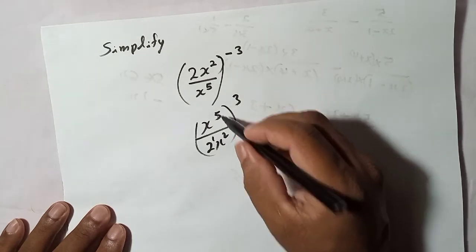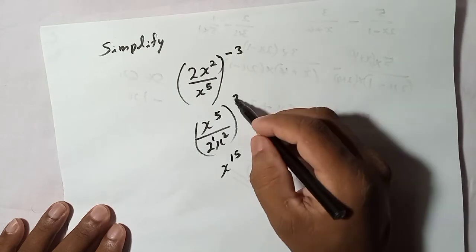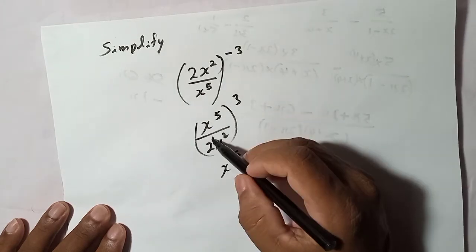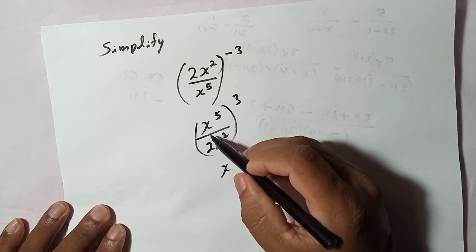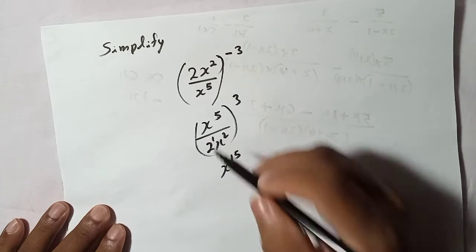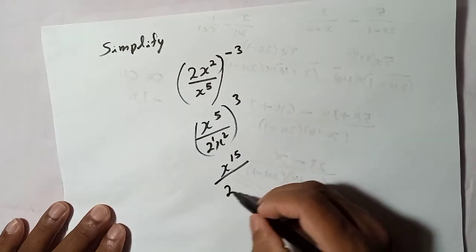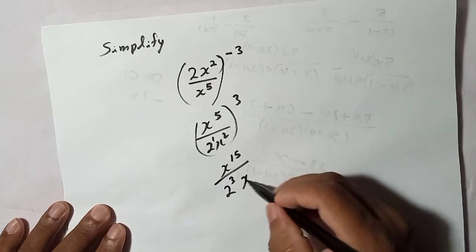So I will multiply 3 into 5, which is 15, so I will write x to the power 15 because 3 into 5. Then 3 into 1 - here 2 has index 1, there is no index means it is 1 - so 3 into 1 is 3, so I will write 2³. And then here x, 3 into 2 is 6.